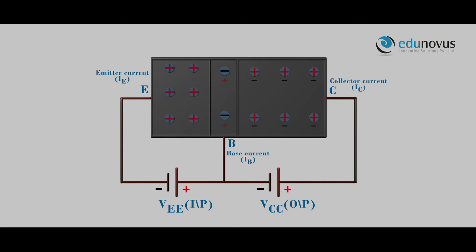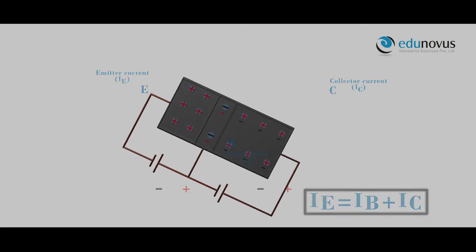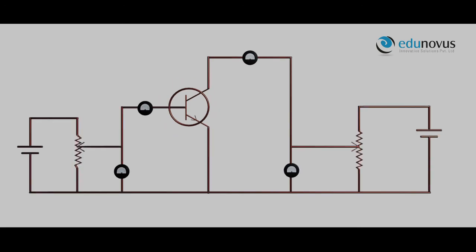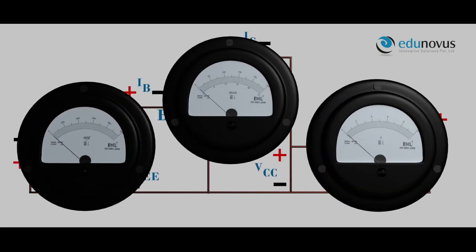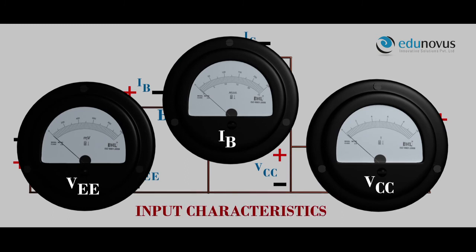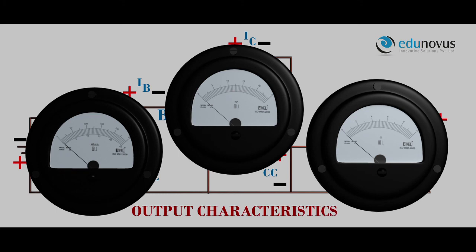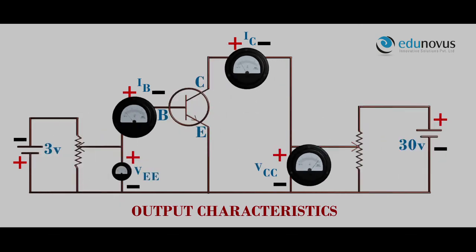To study the characteristics, let us connect the NPN transistor in the circuit. For input characteristics, for different constant collector voltages, we notice the corresponding change in the base voltage and base current IB. For output characteristics, for different constant base current IB, we notice the corresponding changes in the collector current IC and the collector voltage VC.